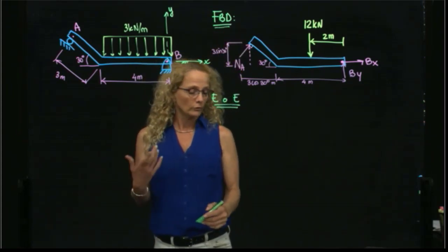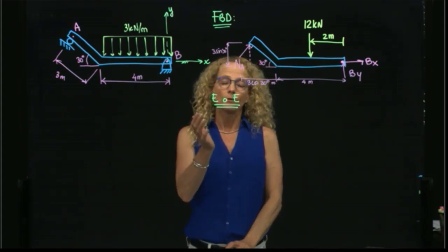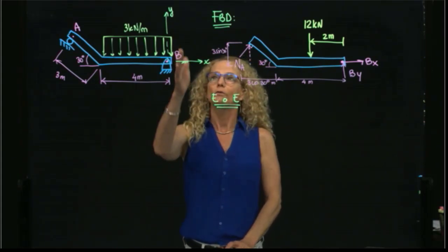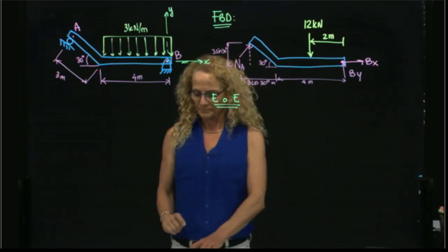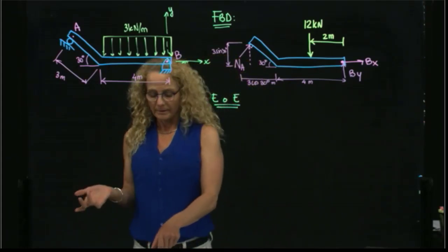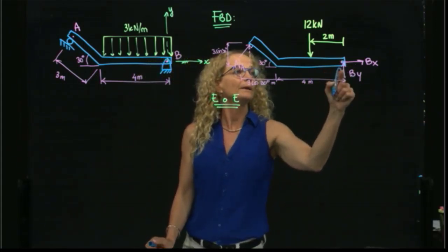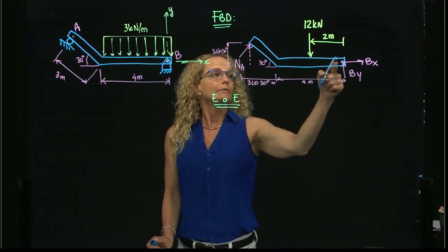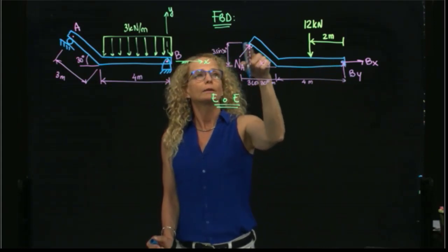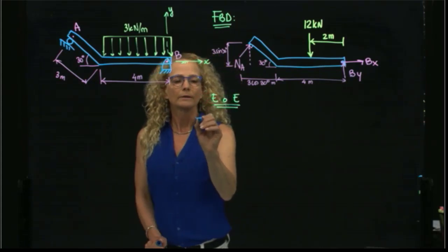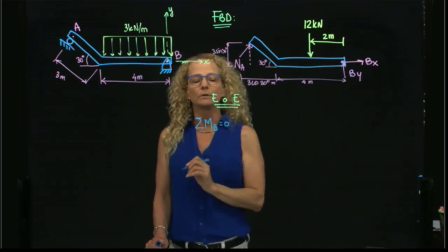As you know, the equations of equilibrium are: adding forces in X, adding forces in Y, and taking moment with respect to one point. I will start by taking moment with respect to B. In this way, I have only one unknown, which is the reaction at A. So if I take moment at B, this will be equal to zero.